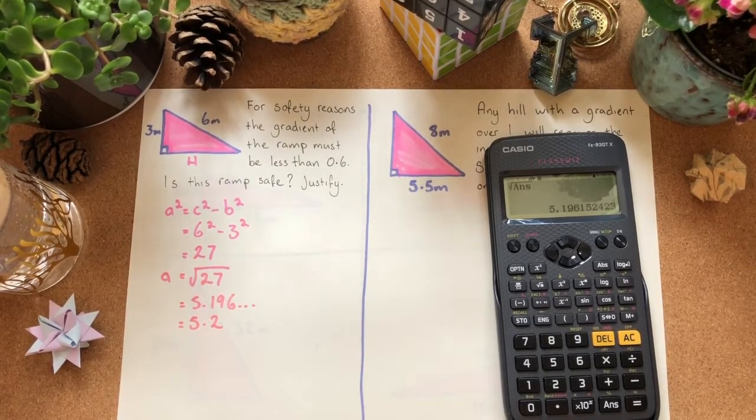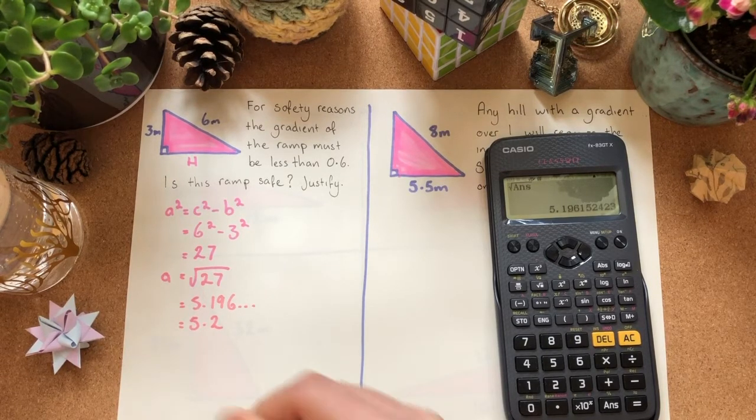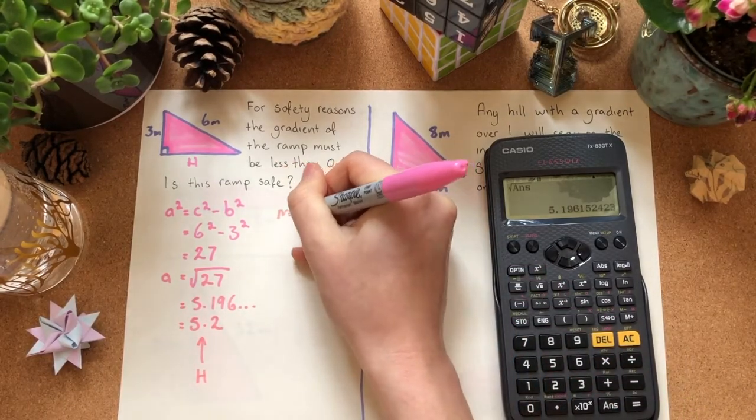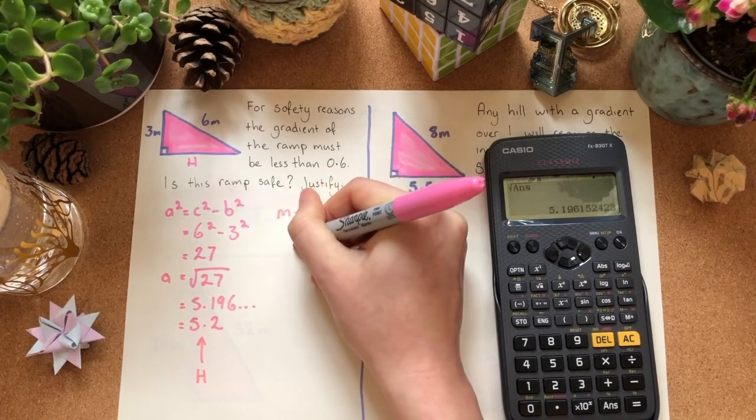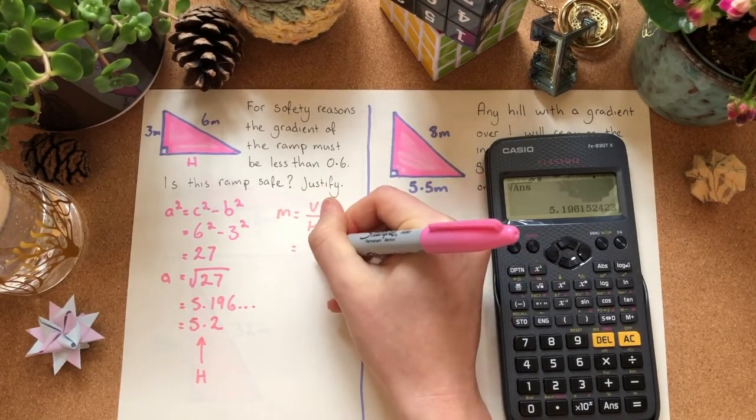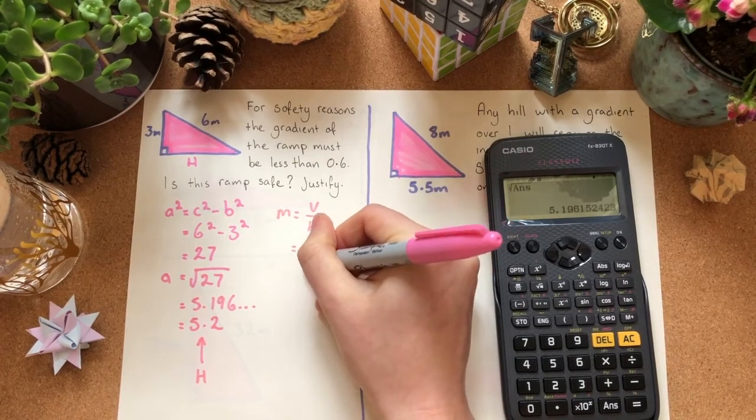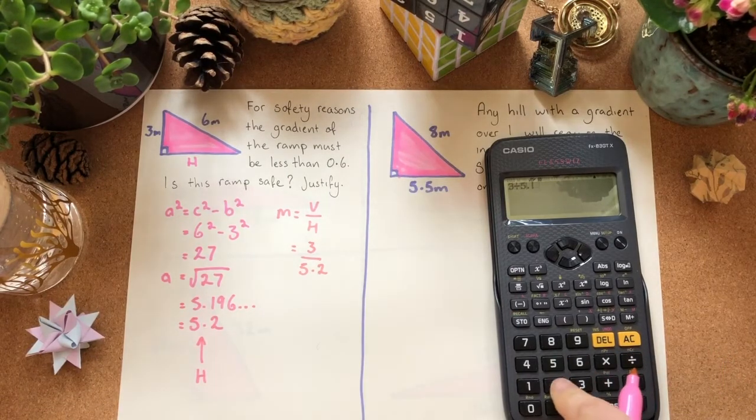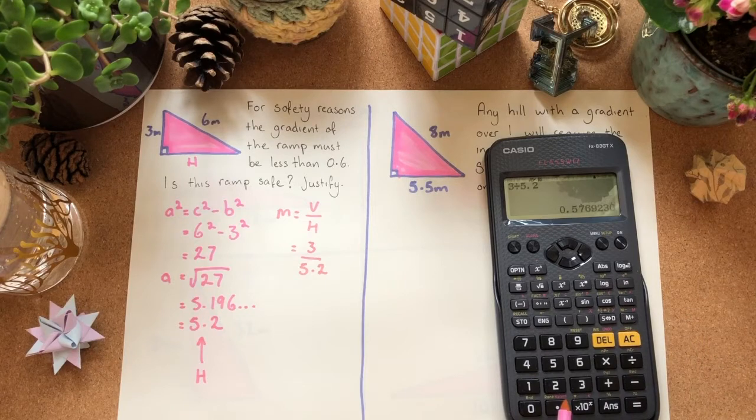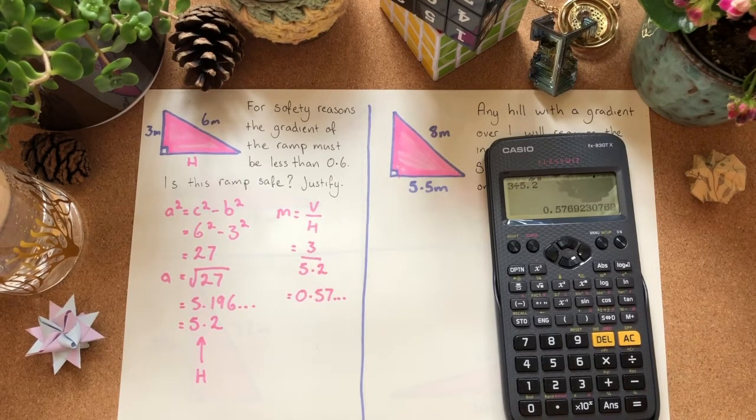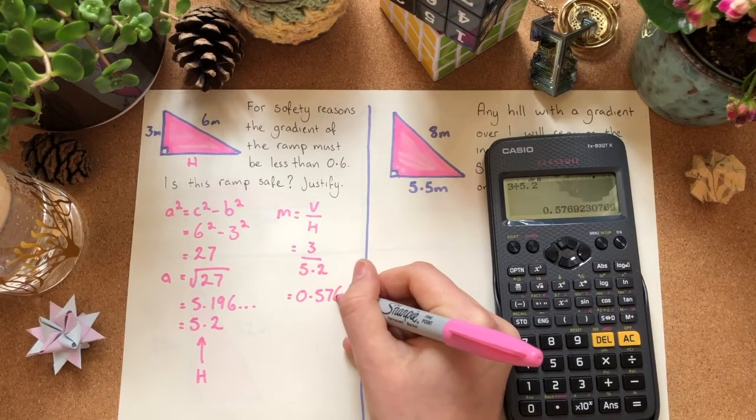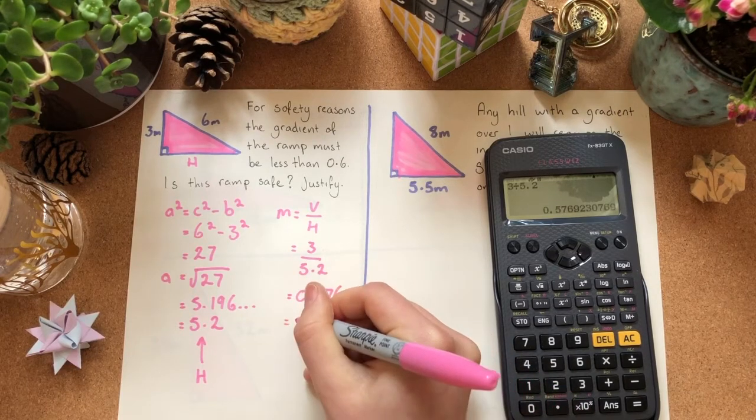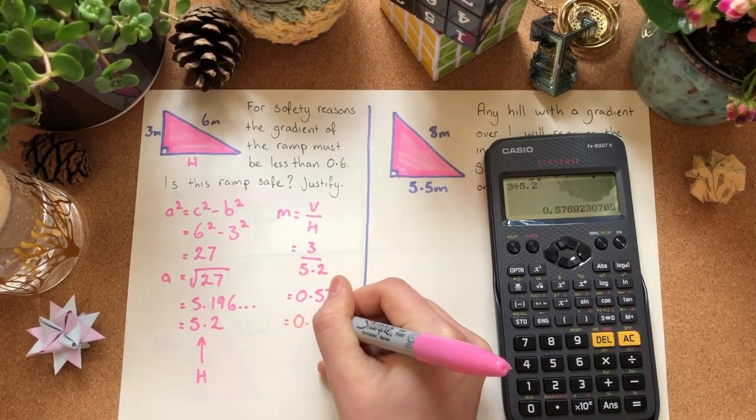So now, I've got all of the information that I need. That's h there, is this 5.2. So, I can then go and do my gradient is equal to vertical over horizontal, showing my formula first. Then my substitution, the vertical height is 3, the horizontal height I now know is 5.2. So, I'll have 3 divided by 5.2, gives me 0.57. I better actually include that 6 in there, for rounding purposes. 0.576. Okay, which will then round to 0.58.